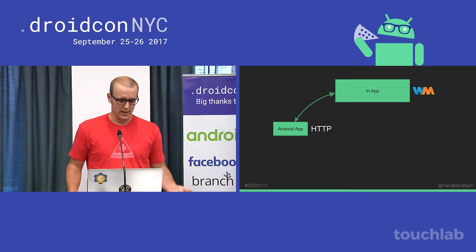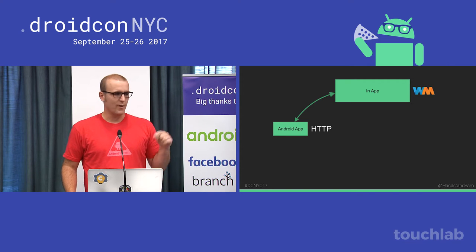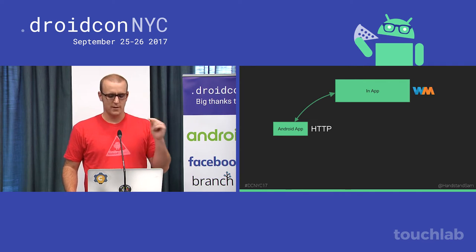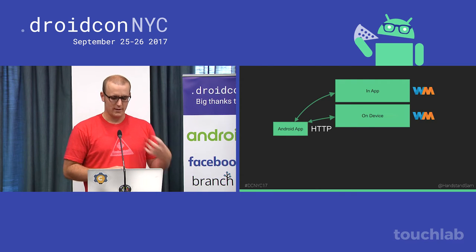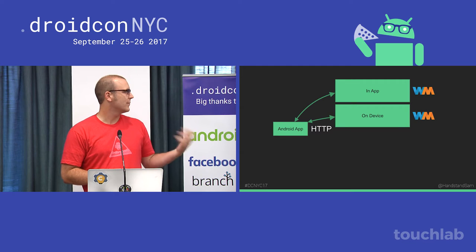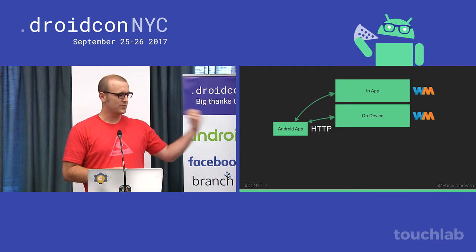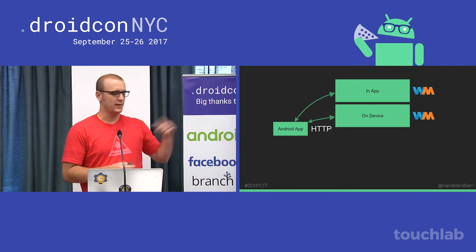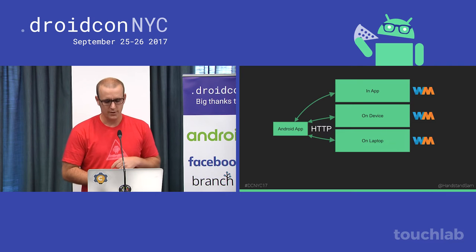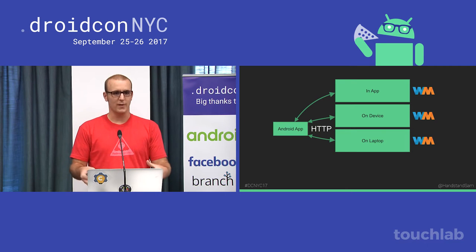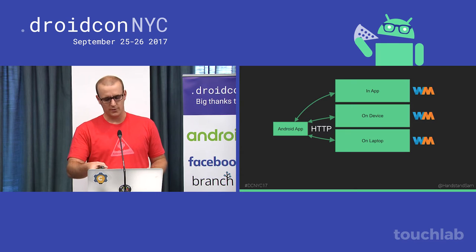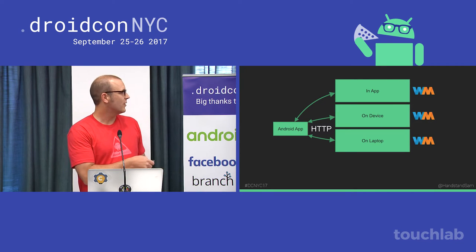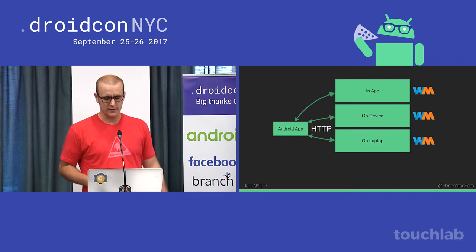You can run WireMock in a few different ways. One, you can actually run WireMock in your app — you can programmatically say create a new WireMock server, start it up, and it's running within your code. Another way is just on the device — you can have a separate app where you start WireMock and you're talking to it over HTTP. You can also start WireMock on your laptop. Your Android app can talk to your desktop because all these are just HTTP.